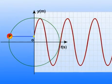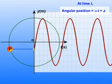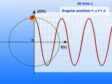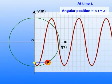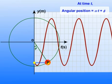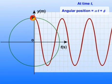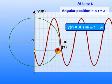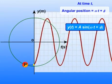At any time t, the angular position of the particle is omega t plus phi. Now what is phi? Phi is its angular position at t equal to 0. So at time t, we have y of t equals A sin omega t plus phi.